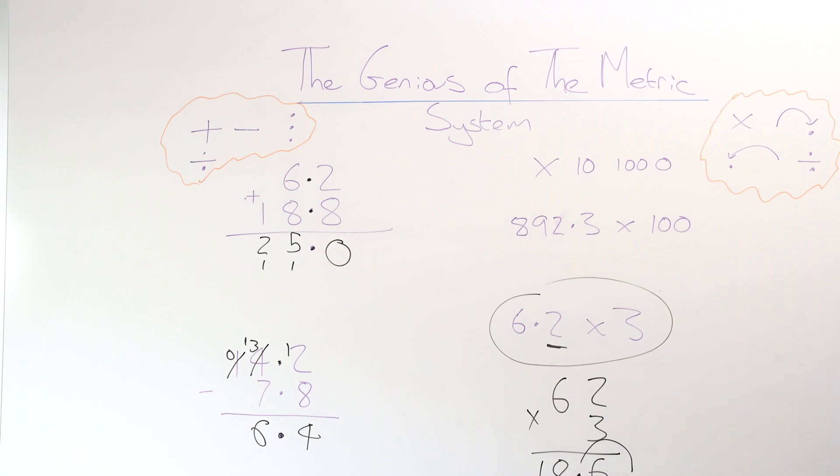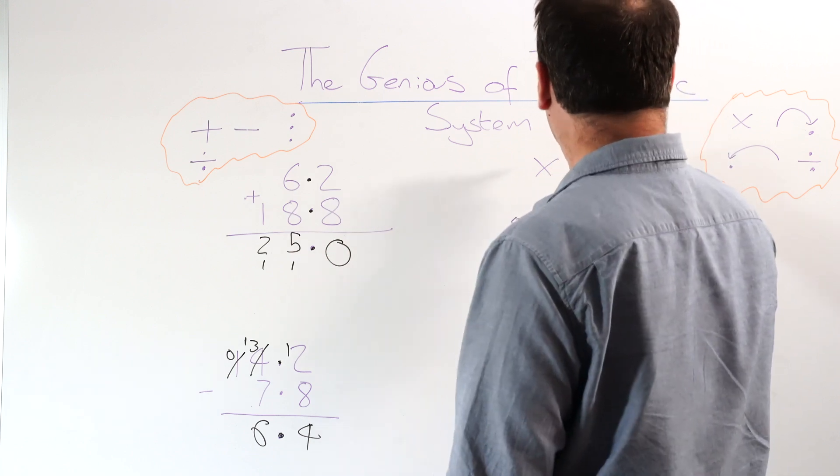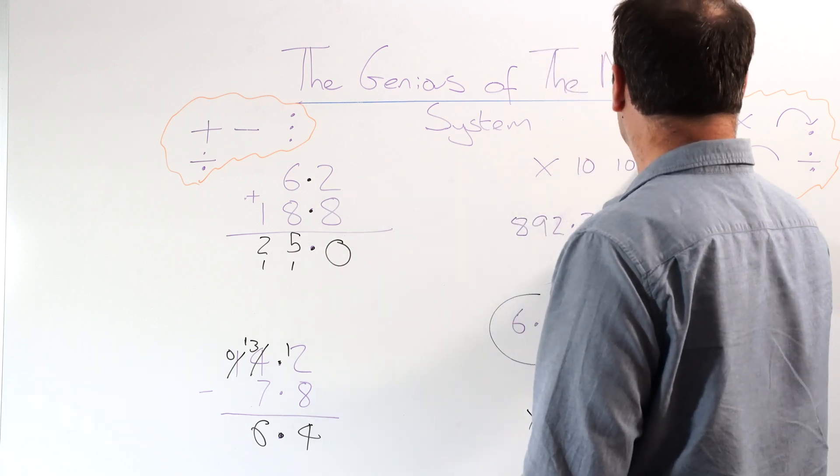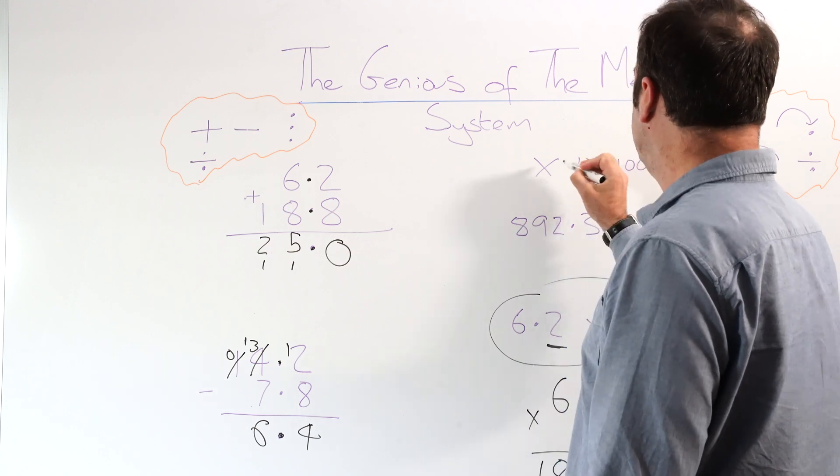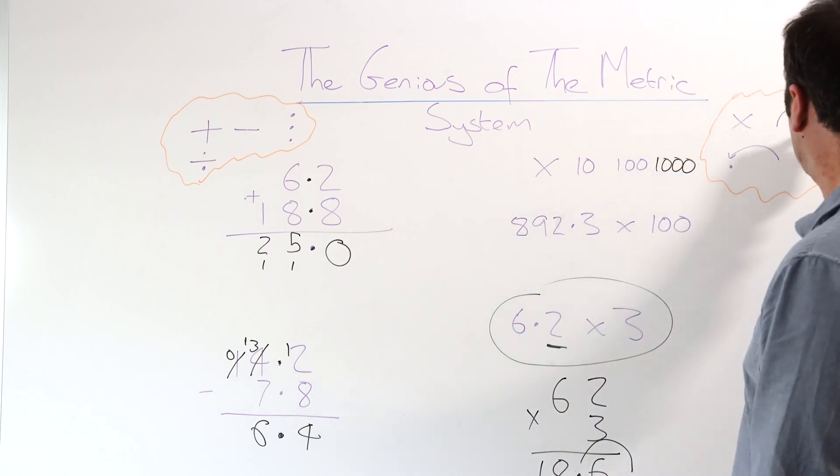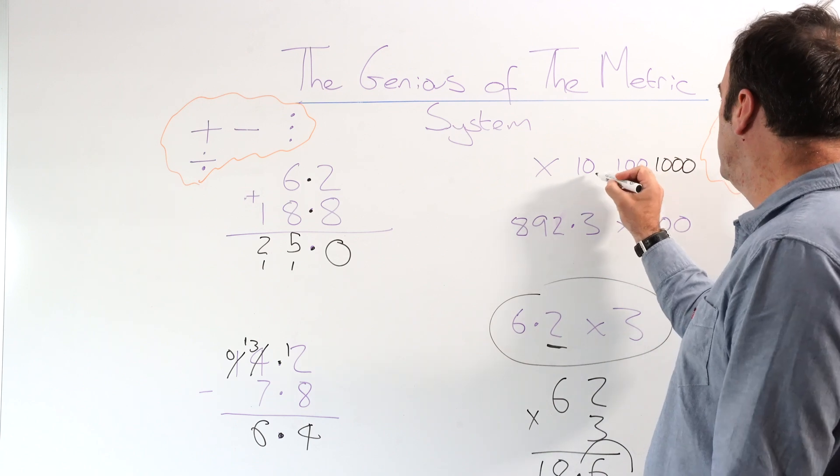So I'm doing a whistle stop tour through all of this. With this, multiply by 10, 100, 1000. What I say to kids, something silly. When we multiply, we go the way we read and write the dot. When we divide, we go the other way. For every zero, we do one jump.